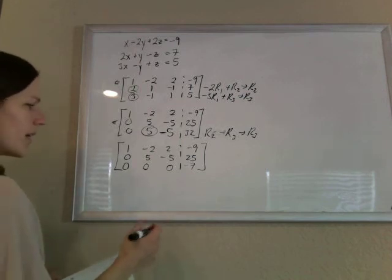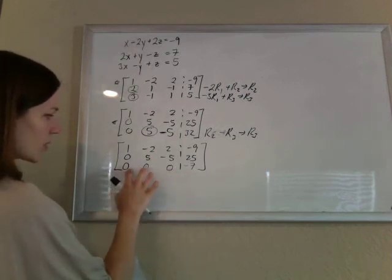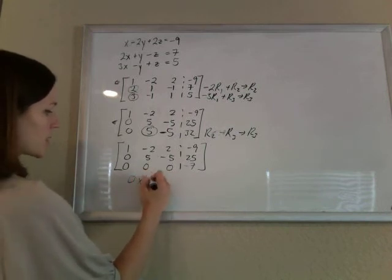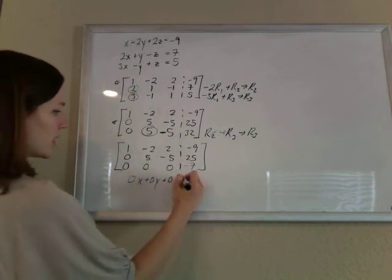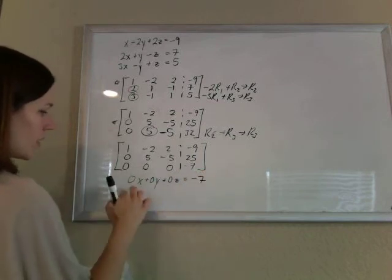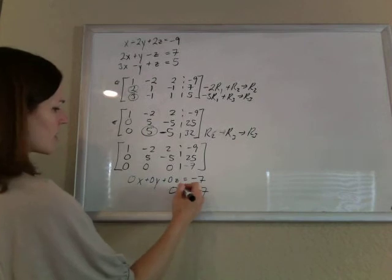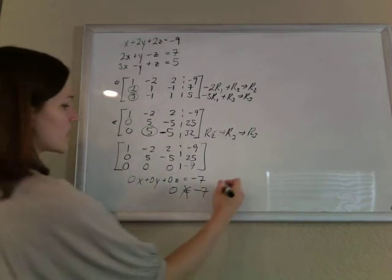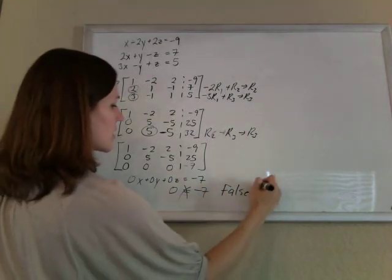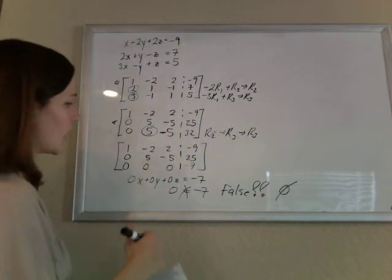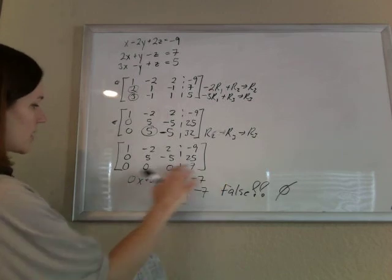So, now when I go to yank it out of the matrix, I've got this weird zero, zero, zero here. This would mean that zero x plus zero y plus zero z equals negative seven. Well, that's zero plus zero plus zero, which is zero, and zero does not equal negative seven. That is a very false statement. So this system of equations has no solution. And that's what a no solution answer looks like.